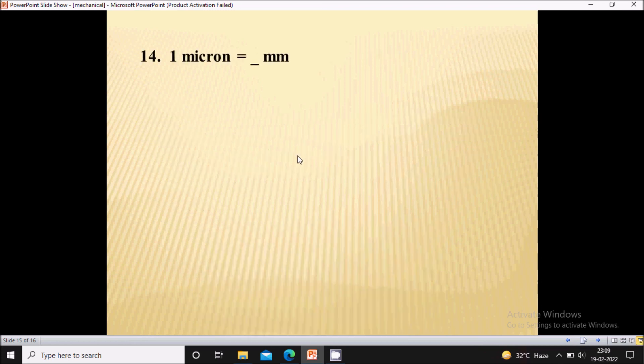Fourteenth question, one micron is equal to how much mm? So one micron is equal to 0.001 mm or 10 to the power minus 3 mm.